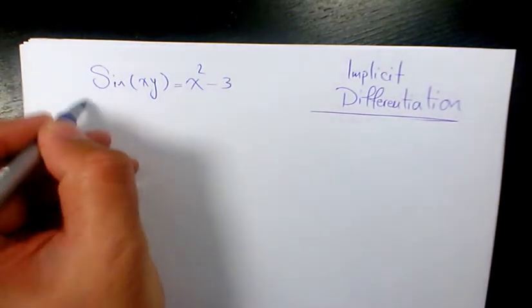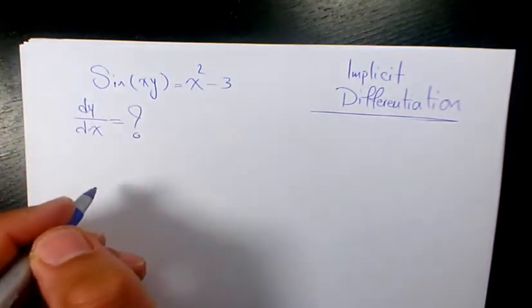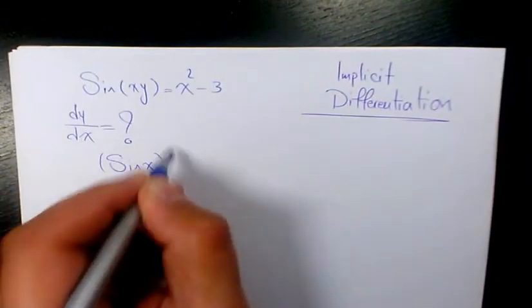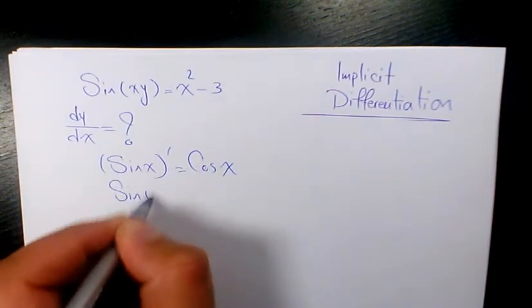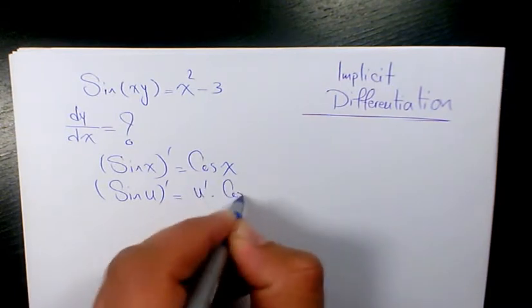I need to use implicit differentiation. So we need to find dy over dx. We know derivative of sine x is cosine x. And derivative of sine u, when u is a function of x, is going to be u prime times cosine u.